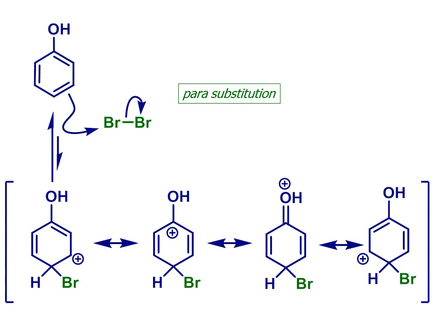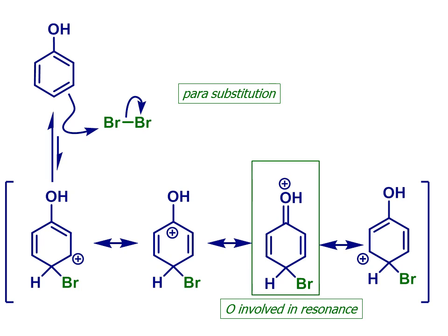A similar situation arises if bromination occurs at the para position. The OH can also become involved in resonance-stabilization here and the charge is further spread. So this intermediate also is more stable.